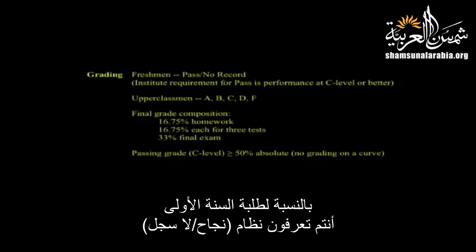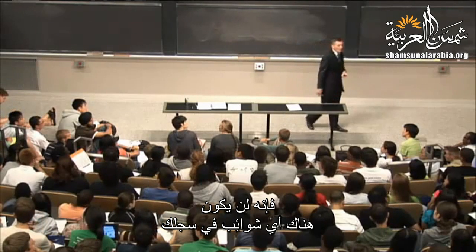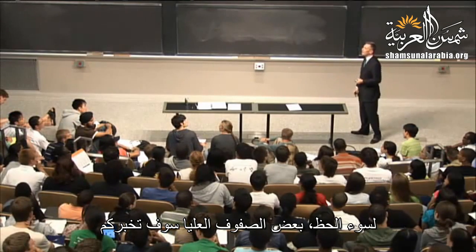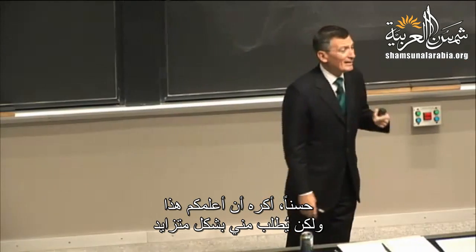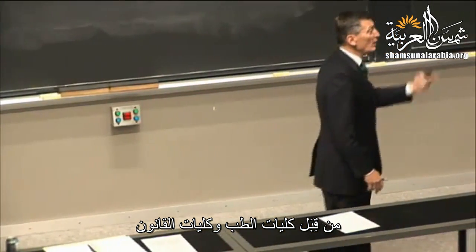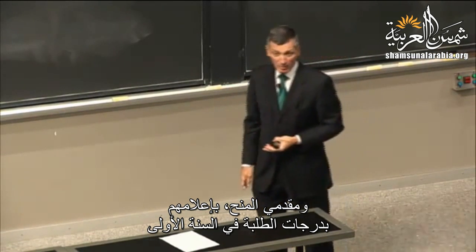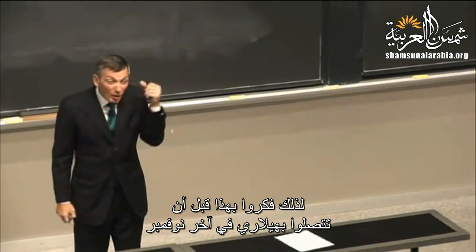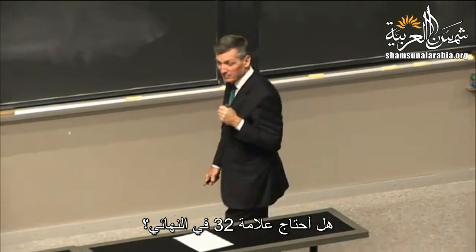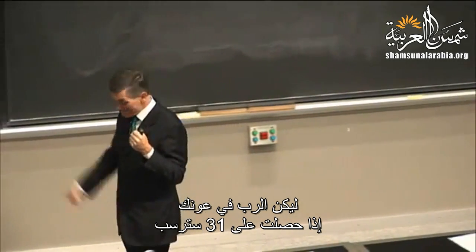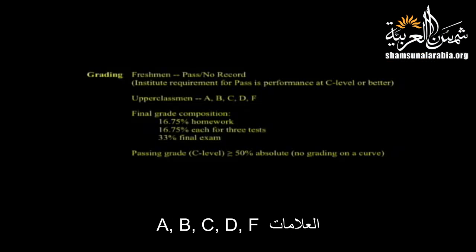Grading: freshmen get pass/no record, so if things don't go well there are no blemishes on your record. However, medical schools, law schools, and scholarship providers are increasingly asking me to reveal freshman year scores — so think about that. Upperclassmen get the full alphabet: A, B, C, D, F. The final grade composition: one-sixth for homework (aggregate weekly quiz scores), one-sixth for each of the three monthly tests, and two-sixths (one-third) for the final exam. I chose 16.75% exactly — I'm the professor.